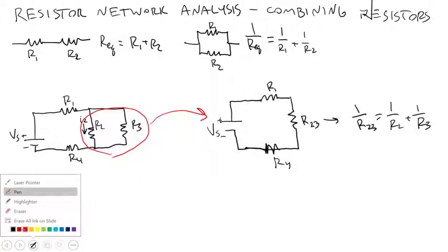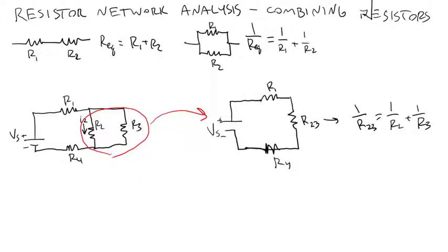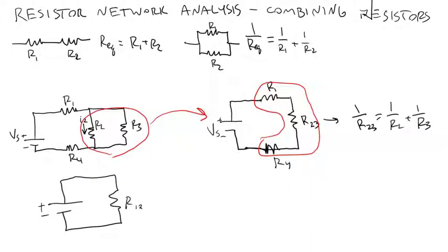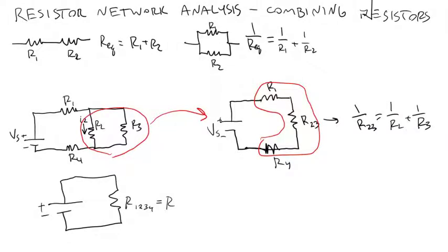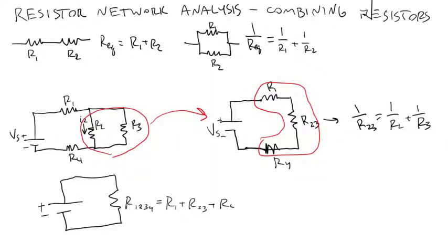So I can now go another step and say I'm just going to combine all three of those resistors in series. So combine all three of these and just write this as one circuit with one resistor. I'll call that R1,2,3,4, which is equal to R1 plus R2,3 plus R4.